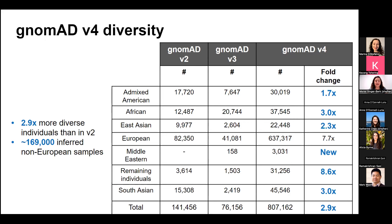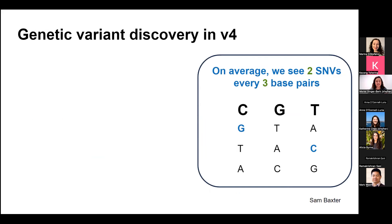The biggest difference between this version of GnomAD and prior exome versions is that it is aligned to HG38, the newest reference genome. Although there is still work to be done in getting more diversity into GnomAD, this newest release provided around three times more diverse individuals than V2, with around 170,000 inferred non-European samples — more than the total number of samples seen in the V2 version.